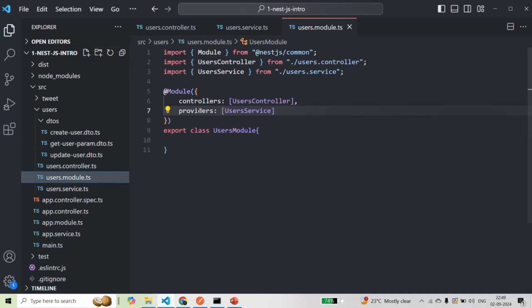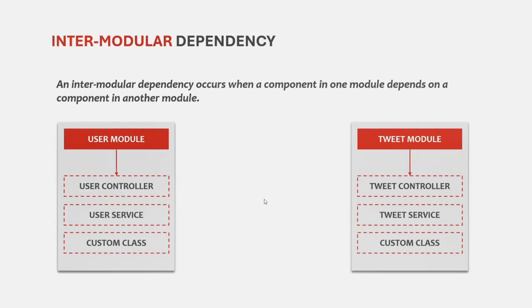The second type of dependency is intermodular dependency. An intermodular dependency occurs when a component in one module depends on a component in another module. Let's say in our NestJS application we have two modules: a user module and a tweet module. Inside the tweet service, we also want to use the user service of this user module. So the tweet service has a dependency on the user service from a different module — this is called intermodular dependency. We will see this with an example in our coming lectures.